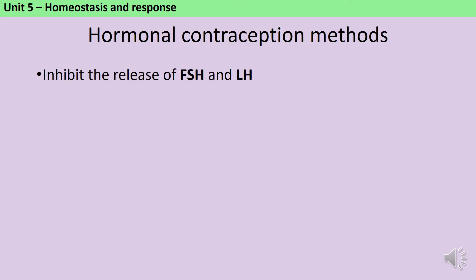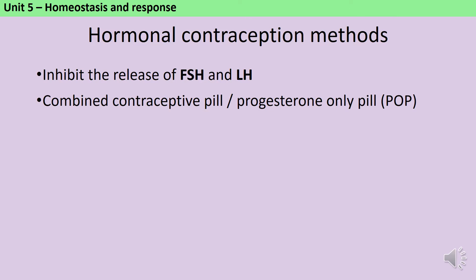Hormonal contraception methods use the hormones that are produced by the ovaries to inhibit the hormones produced by the pituitary gland. FSH and LH cause the egg to mature and ovulation to happen, so without these being released there isn't any ovulation and therefore there isn't an egg for sperm to fertilize. Hormonal contraceptive methods include the combined contraceptive pill, which combines both synthetic estrogen and progesterone, or the progesterone-only pill, which doesn't contain any estrogen and is often prescribed to people who can't have estrogen because they have a history of blood clots in their family.